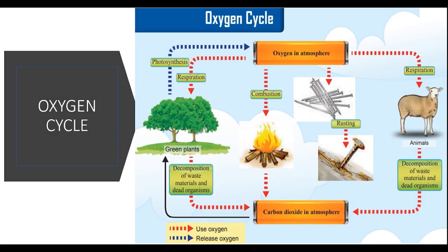Next, let's look at the oxygen cycle. The oxygen cycle is a continuous cycle that takes oxygen from the air and returns it to the air. The processes that take oxygen from the air are respiration, combustion, rusting, and decomposition.